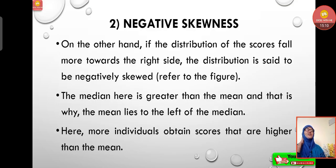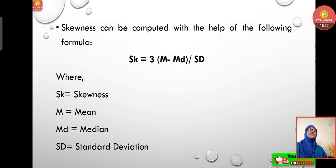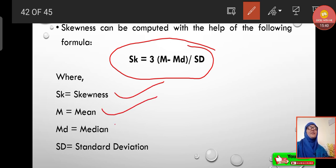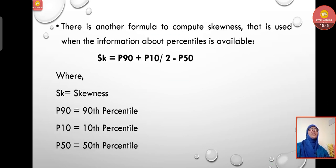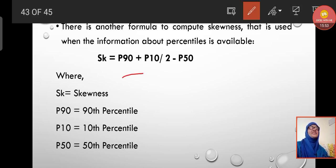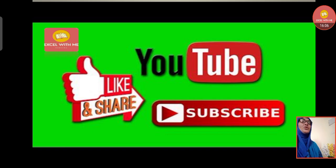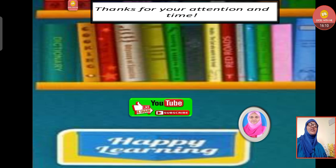In negative skewness, the distribution of scores falls more towards the right side. The median is greater than the mean, and the mean lies to the left of the median. More individuals obtain scores that are higher than the mean. Skewness can be computed using the formula: Sk = (M − Md) / SD, where Sk is skewness, M is mean, Md is median, and SD is standard deviation. Another formula using percentiles is: Sk = (P90 + P10 − 2×P50) / (P90 − P10). If you like the video, please do like, share, subscribe, and comment below. Thanks for your attention and time — happy learning!